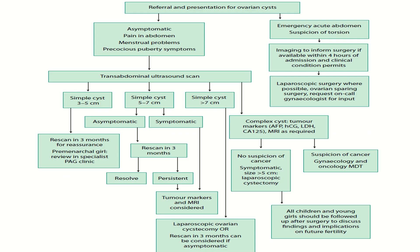This algorithm shows the management of ovarian cysts in adolescence. For referral and presentation, we determine whether the patient is asymptomatic or presenting as an emergency. For an asymptomatic cyst, transabdominal ultrasound is performed. A simple cyst of 3 to 5 cm warrants re-scanning in three months for reassurance. A cyst of 5 to 7 cm is assessed for symptoms; if asymptomatic, re-scan in three months. If symptomatic or persistent, tumor markers and MRI are obtained. A simple cyst more than 7 cm proceeds to laparoscopic ovarian cystectomy or re-scanning in three months.